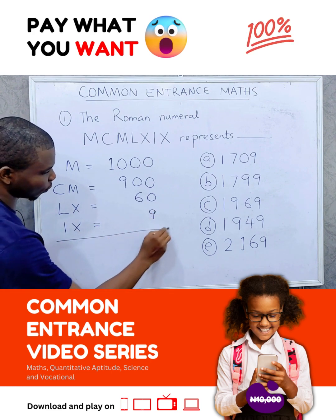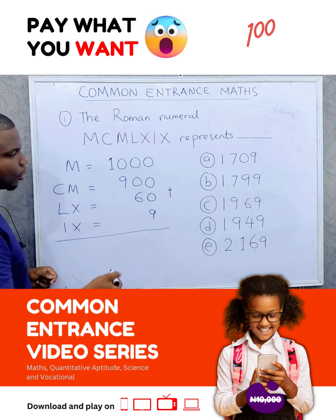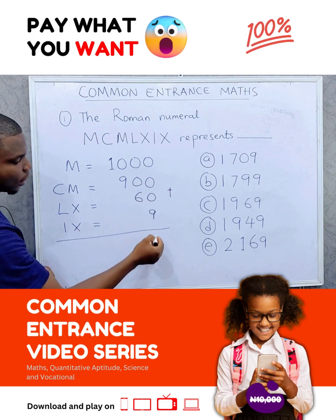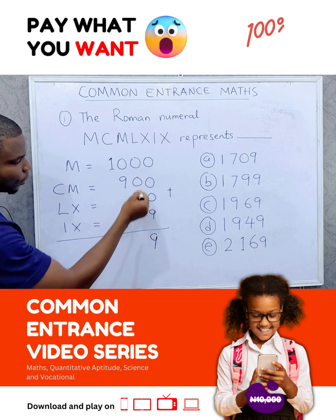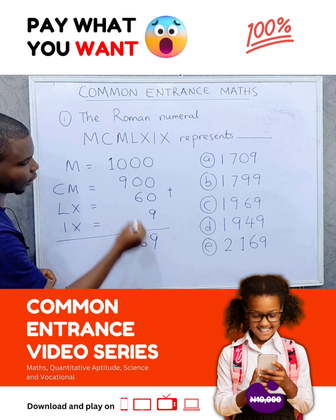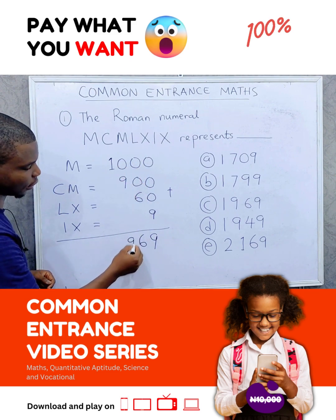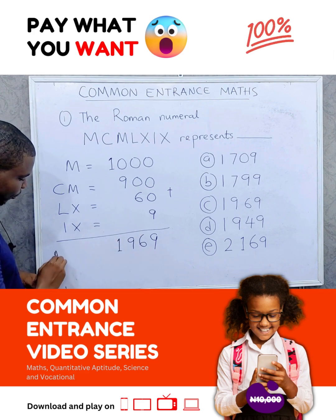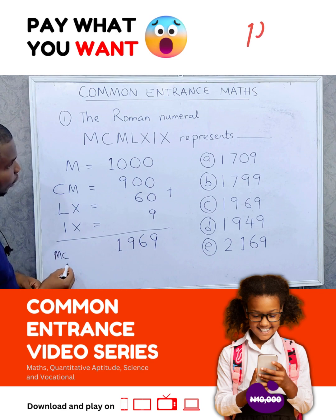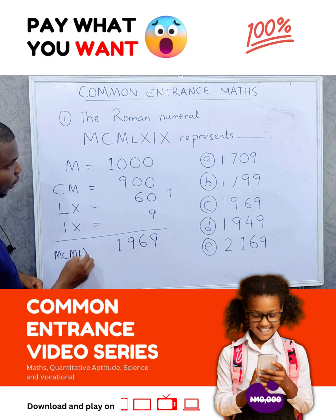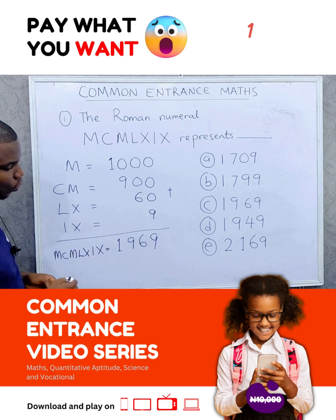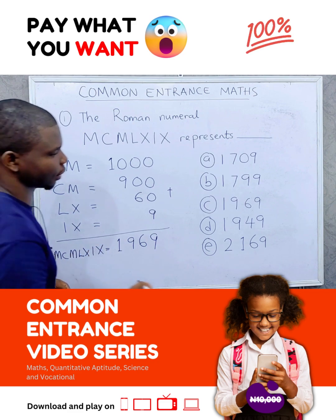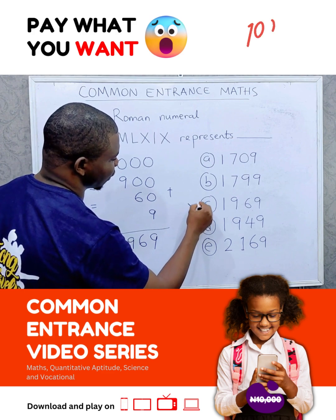So when you get all of them, you add them up. 9 plus 60 plus 900 plus 1000. So MCMLXIX is equal to 1969. And that's our answer, C.